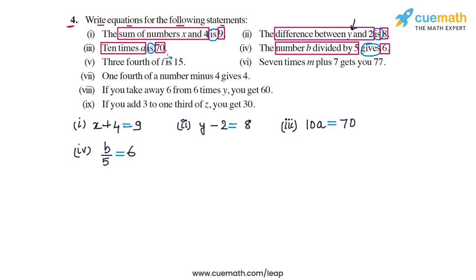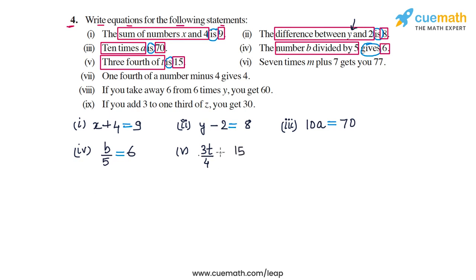In part 5, we have 3/4 of t is 15. The LHS will be 3/4 of t and the RHS will be 15. The LHS is 3/4 of t, which I can also write as 3t by 4. The RHS is 15, and we equate these two to get the equation for part 5.